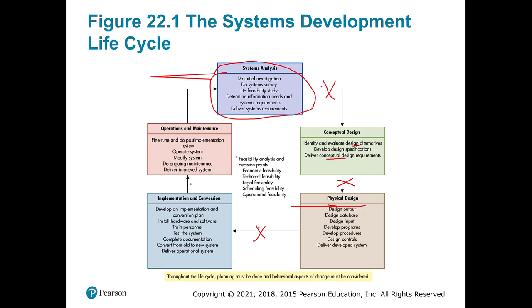That finished system is still on the developer's computer, so we go ahead and make it go live. Making it go live requires an implementation plan — how do you go from the system on a developer's computer to one working properly with all users? This includes installing hardware and software, training people, testing, documentation, and finally having an operational system. Once the system is live, we transition to the operation and maintenance phase, which usually involves bug fixes and ongoing maintenance like new versions.